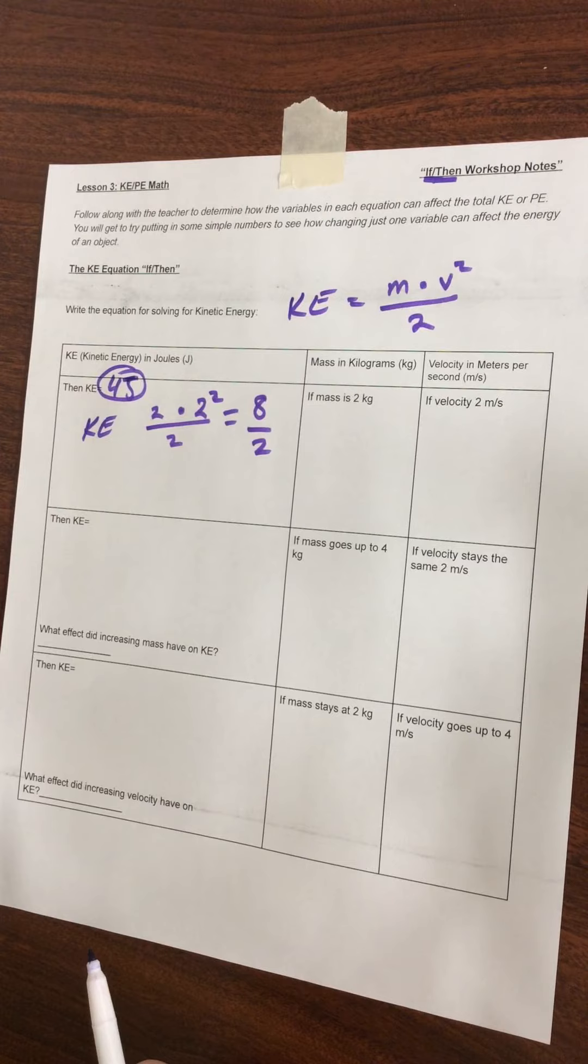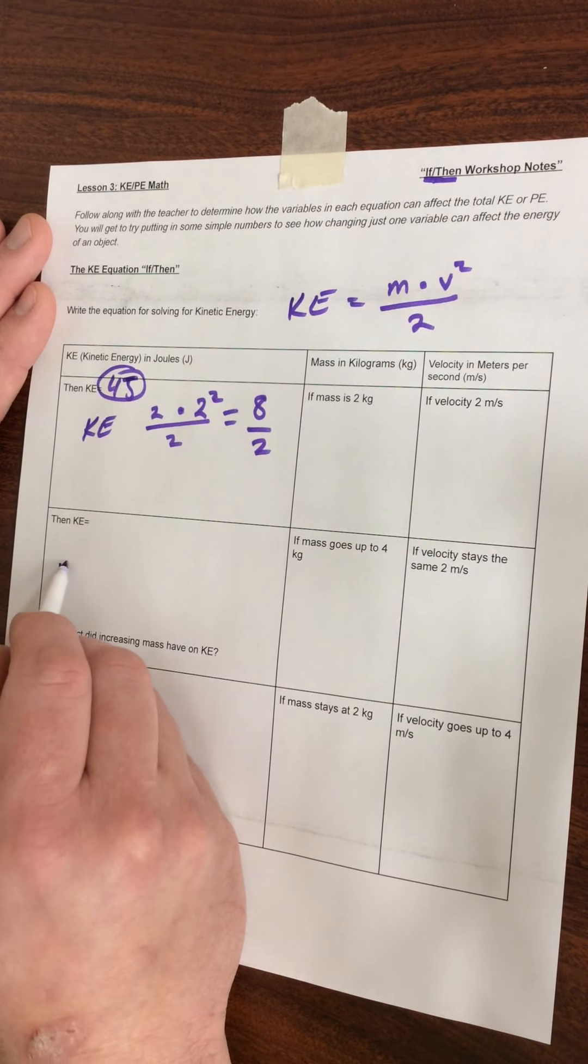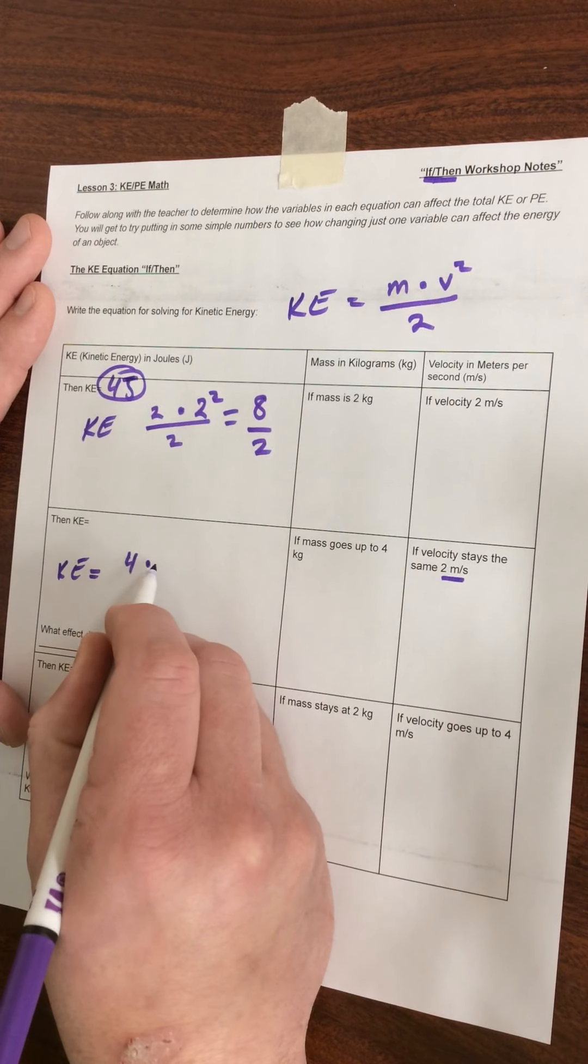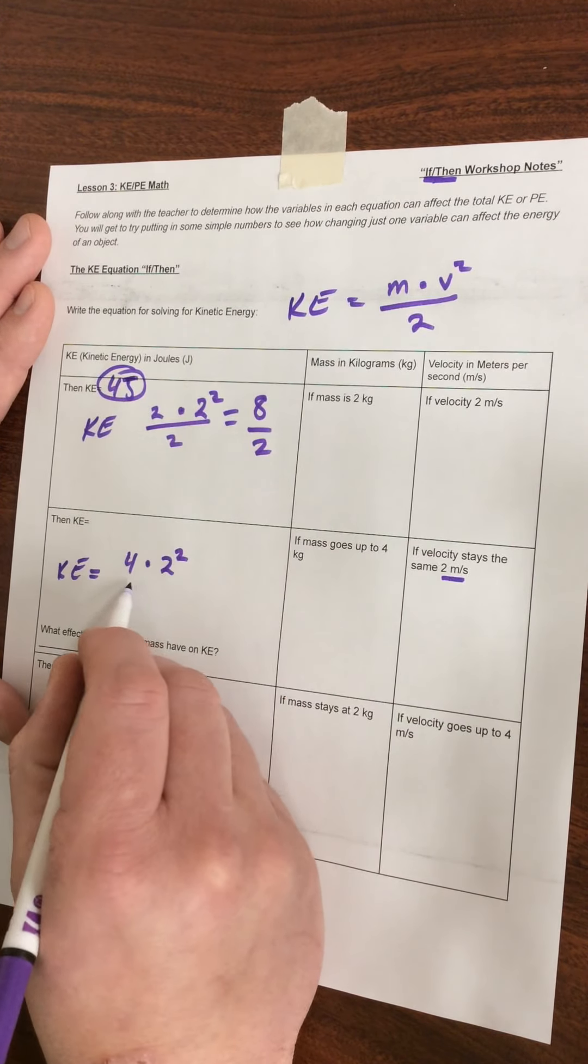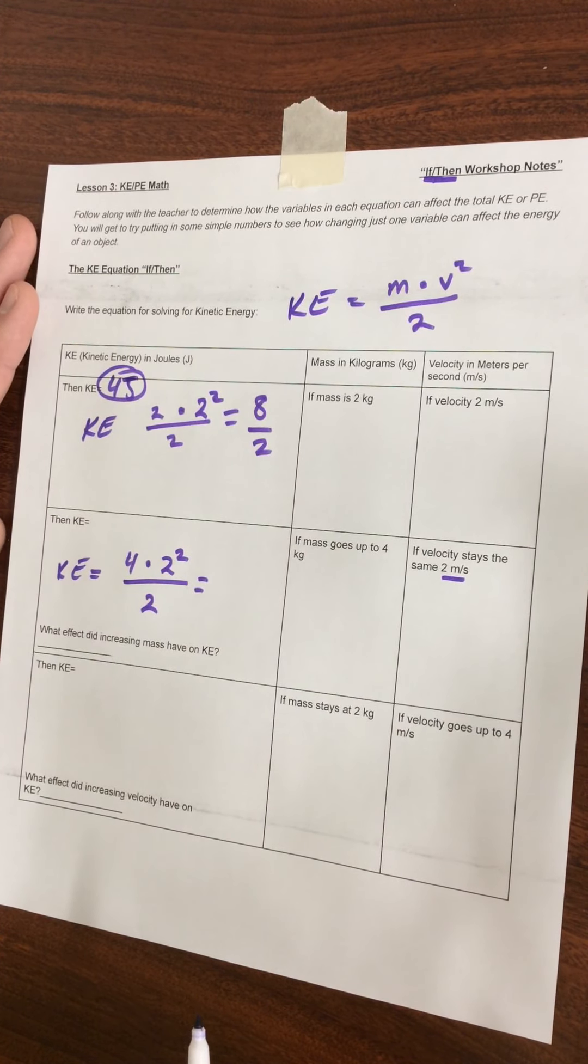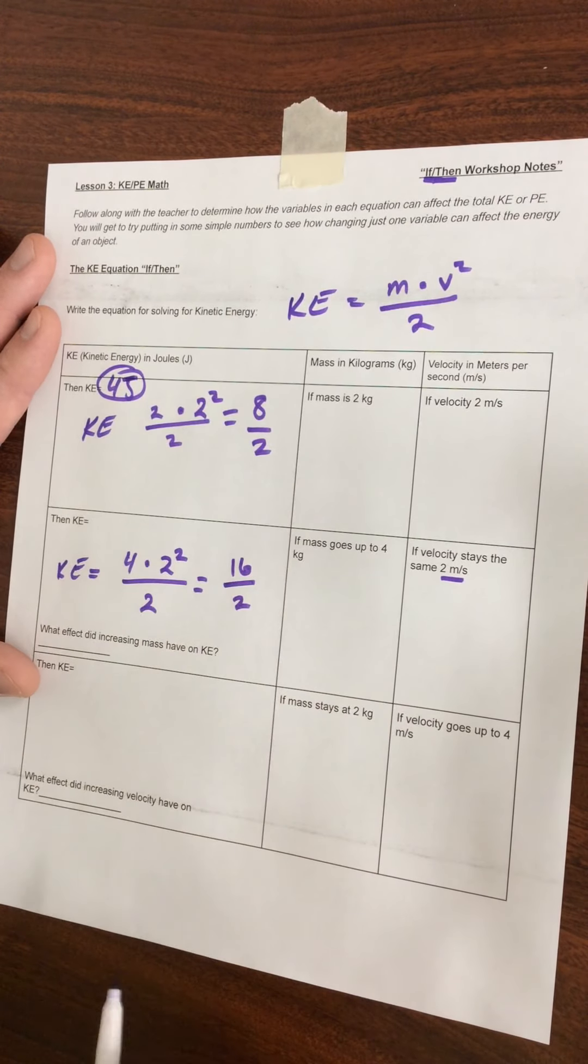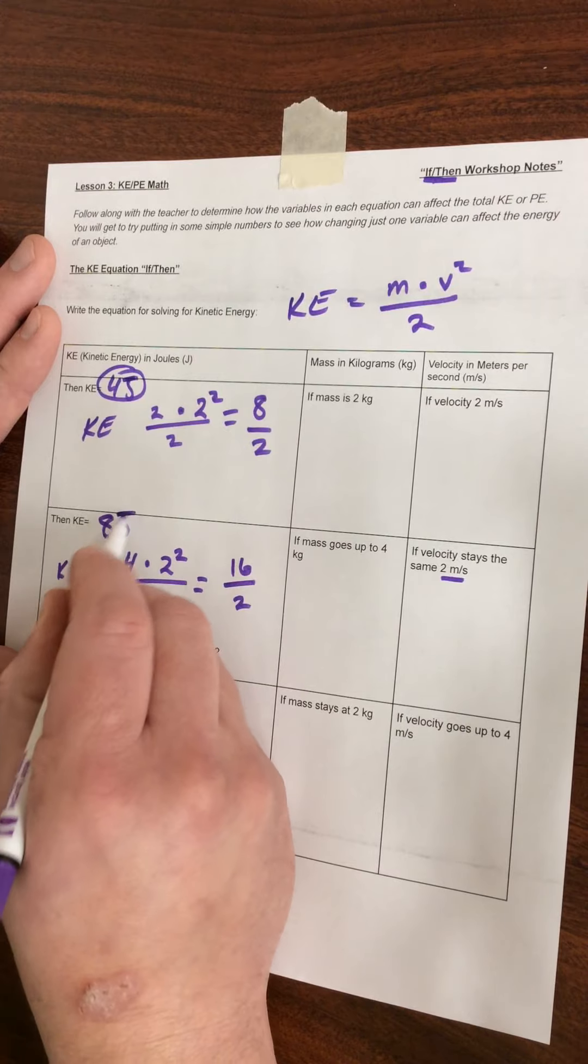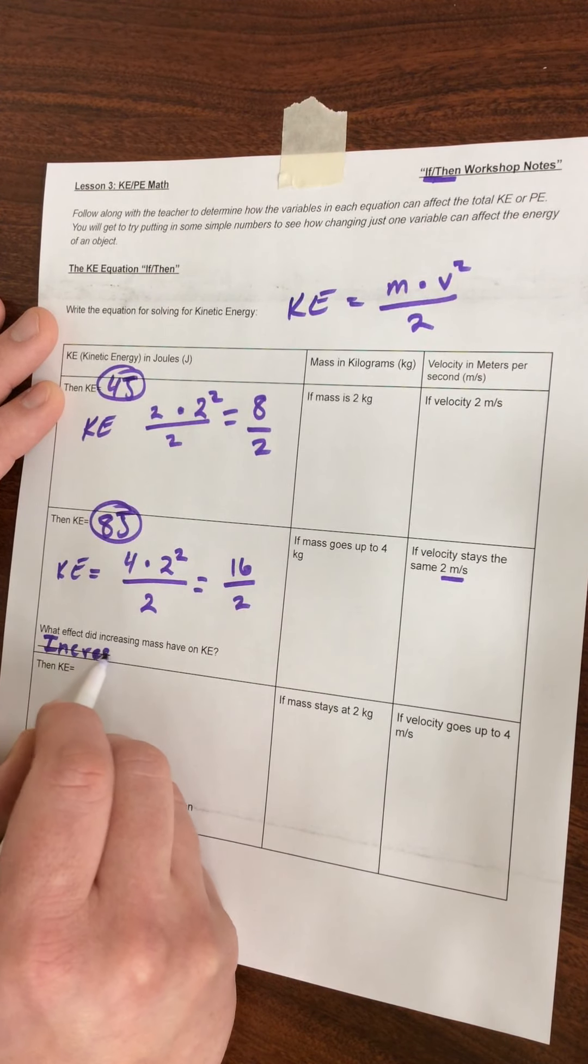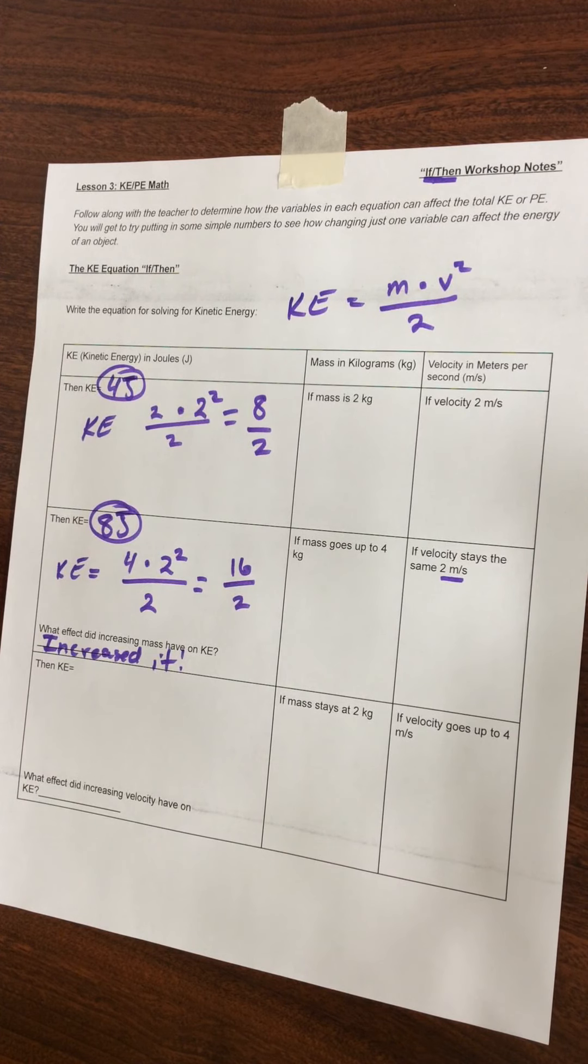We're going to compare this answer, four joules, to our next two. We're going to look at the same body, but the mass has gone up to four kilograms. So KE equals four kilograms, the velocity is going to stay the same at two meters per second times two, and that has to be squared. Two squared is still four, but four times four, now we have 16 in the numerator, and our denominator is still two. 16 divided by two gives us a total of eight joules. So the question is what effect did increasing mass have on kinetic energy? Well, it increased it.